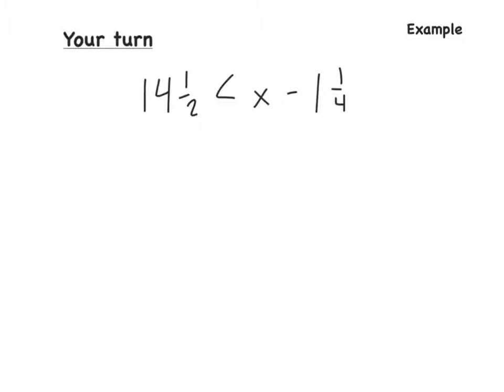So I'm just going to rewrite this. So we have x minus 1 and 1 fourth is greater than 14 and a half. You don't have to do this, but later when it comes to graphing, I highly recommend that you're going to do this. So, if we want x by itself, what's the opposite of minus 1 and 1 fourth? It's to add 1 and 1 fourth to both sides.